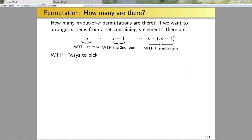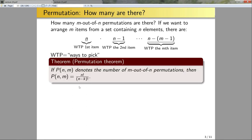I'm going to give you a theorem. If P(n, m) denotes the number of m-out-of-n permutations, then P(n, m) is equal to n factorial divided by (n minus m) factorial.